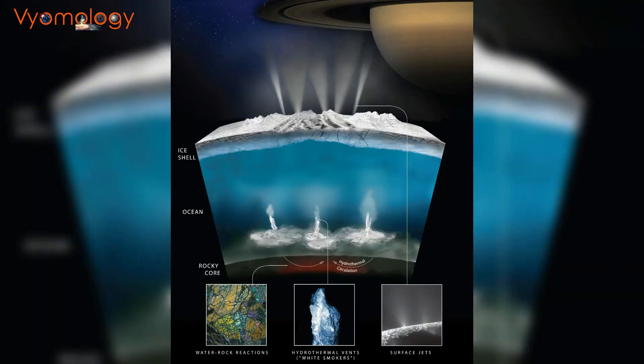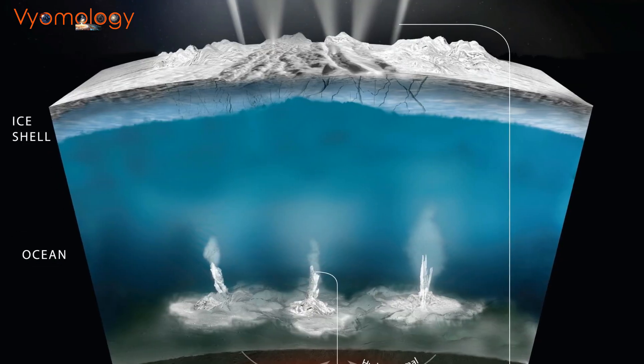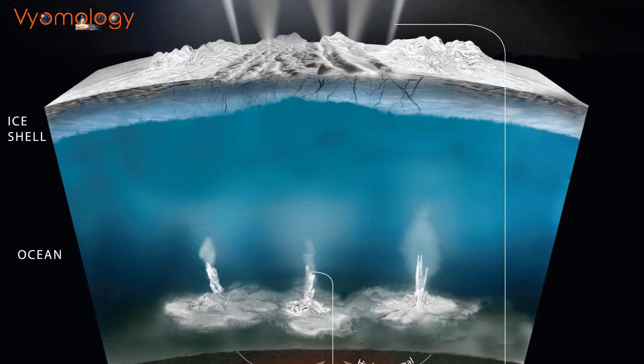Earth's archaea, with similar conditions, thrive for billions of years. Biochemical modeling suggests compatibility with Enceladus' ocean.